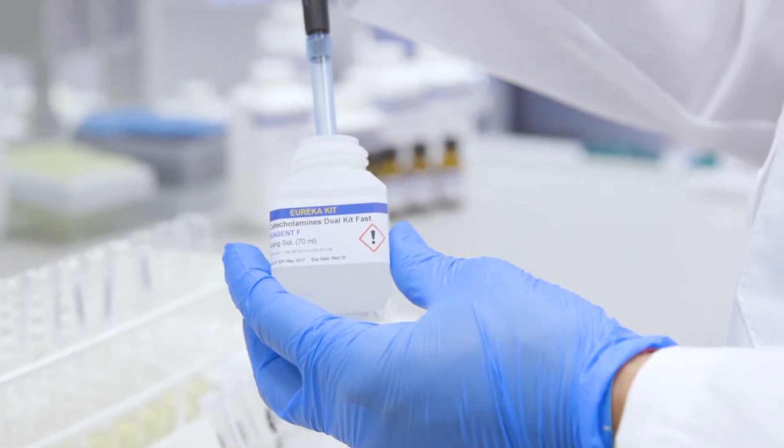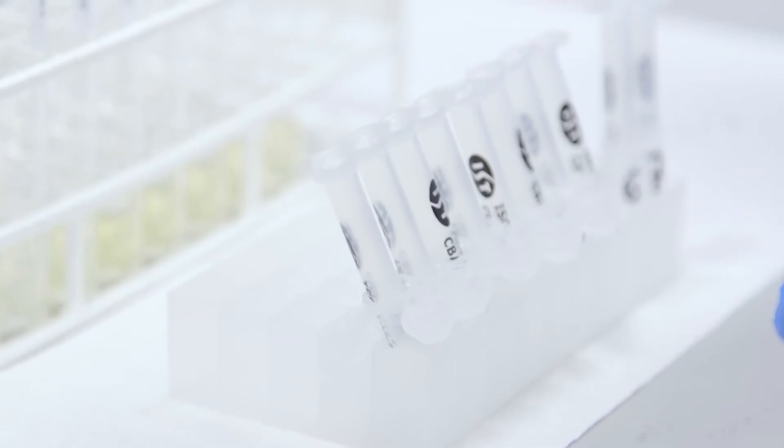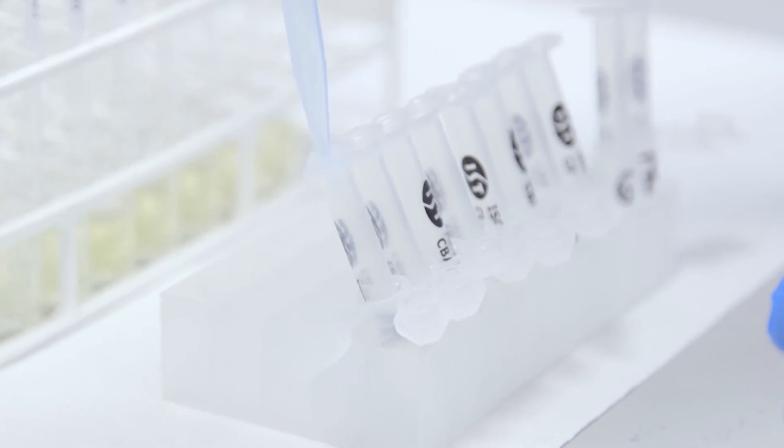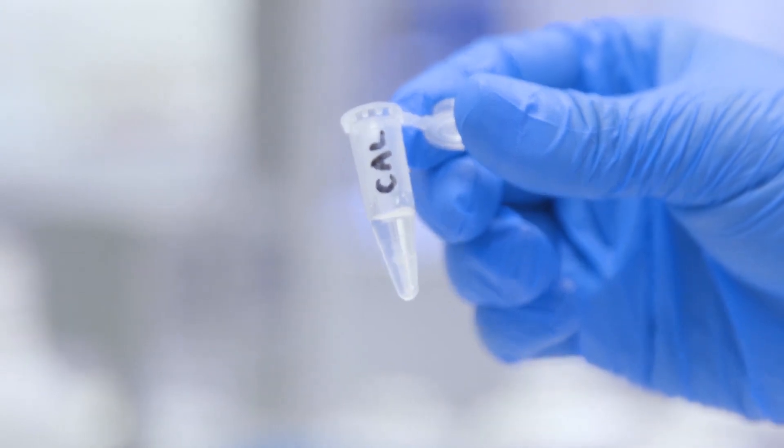Add 500 microliters of reagent F to each SPE column, taking care to collect the eluate. The elution should take place slowly for about 1 minute. Then the eluate is vortexed for 5 seconds.